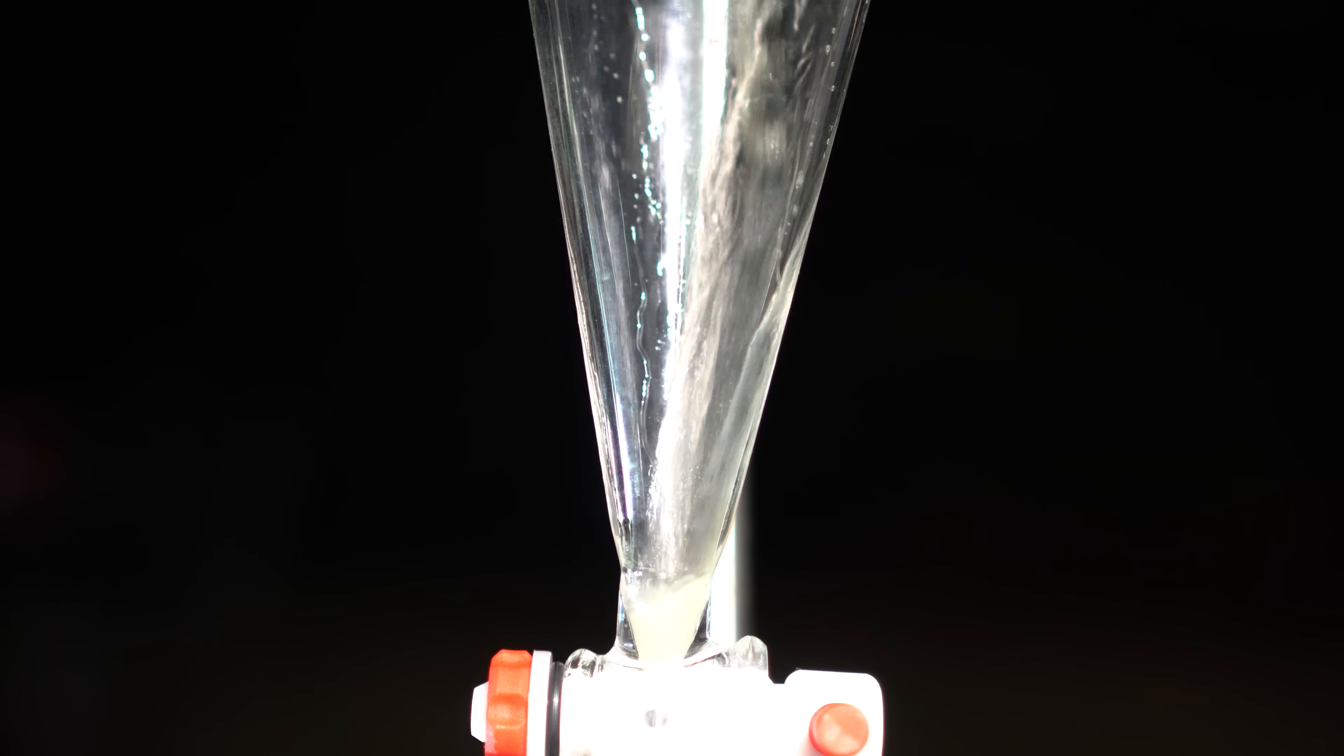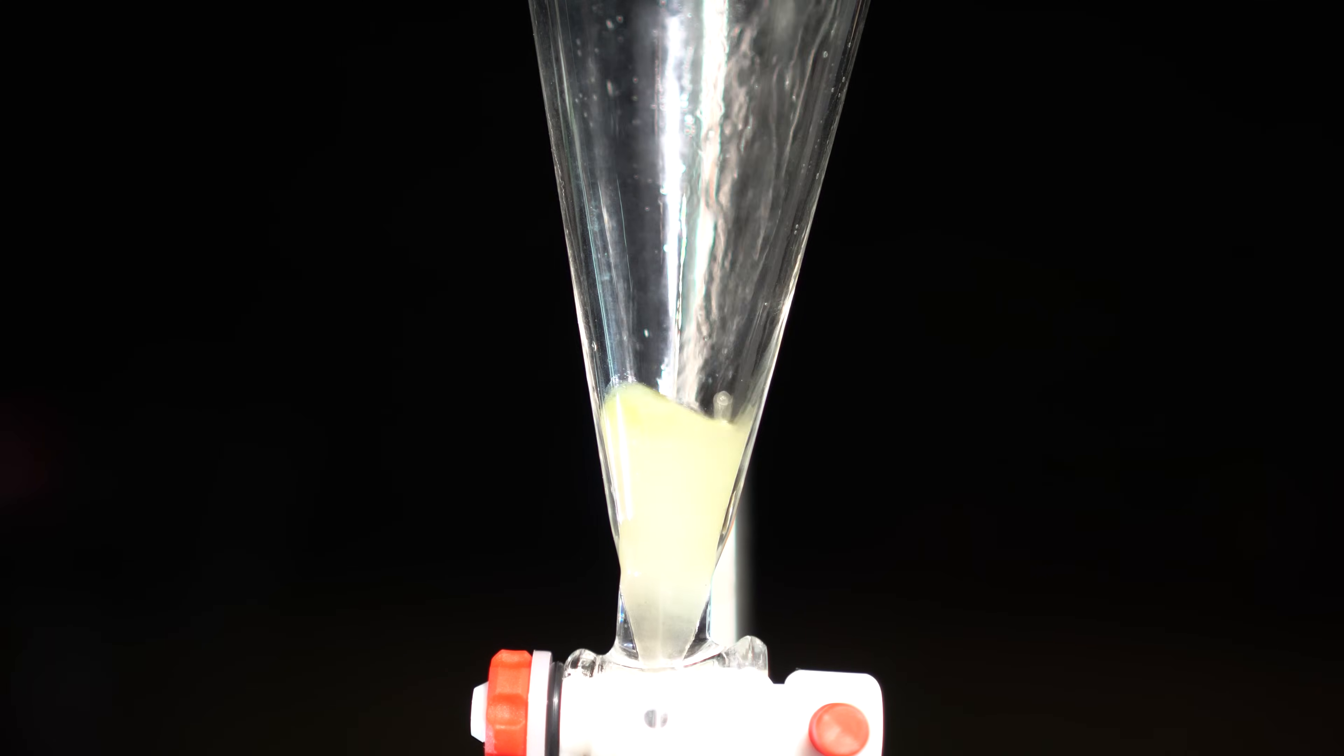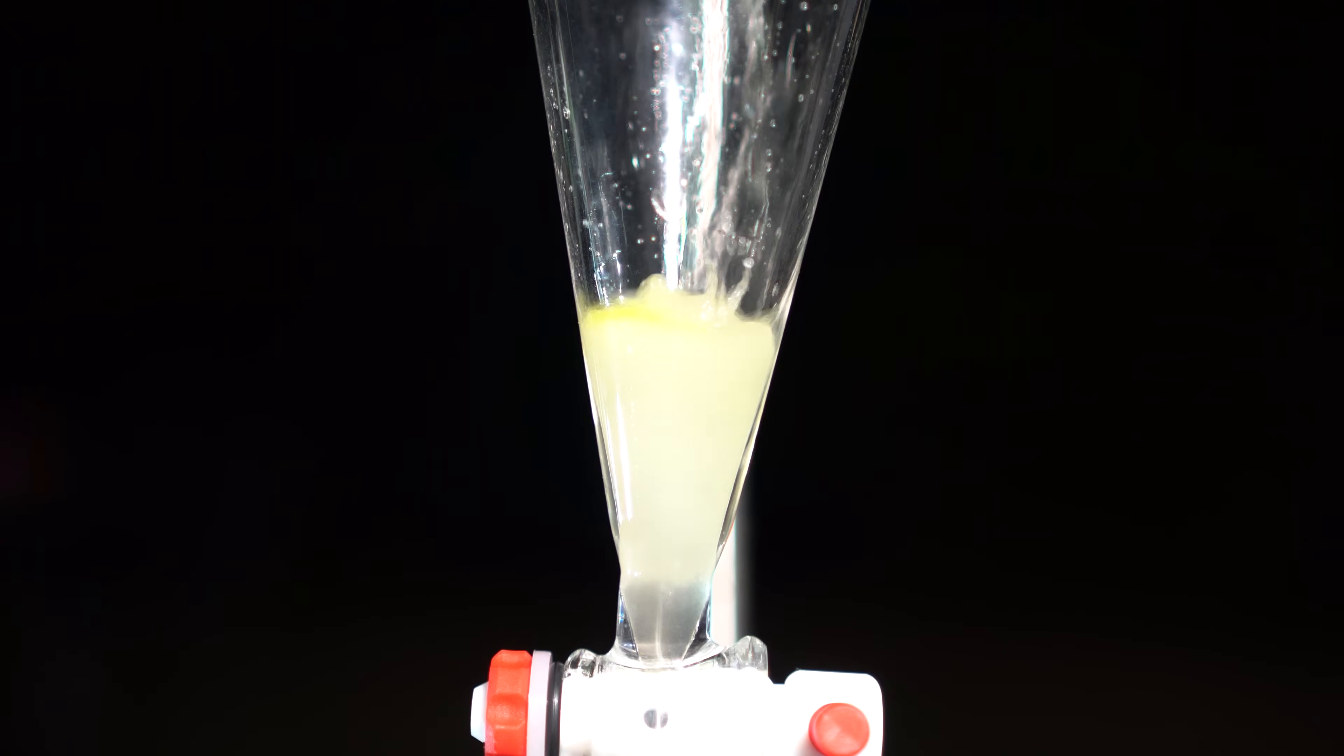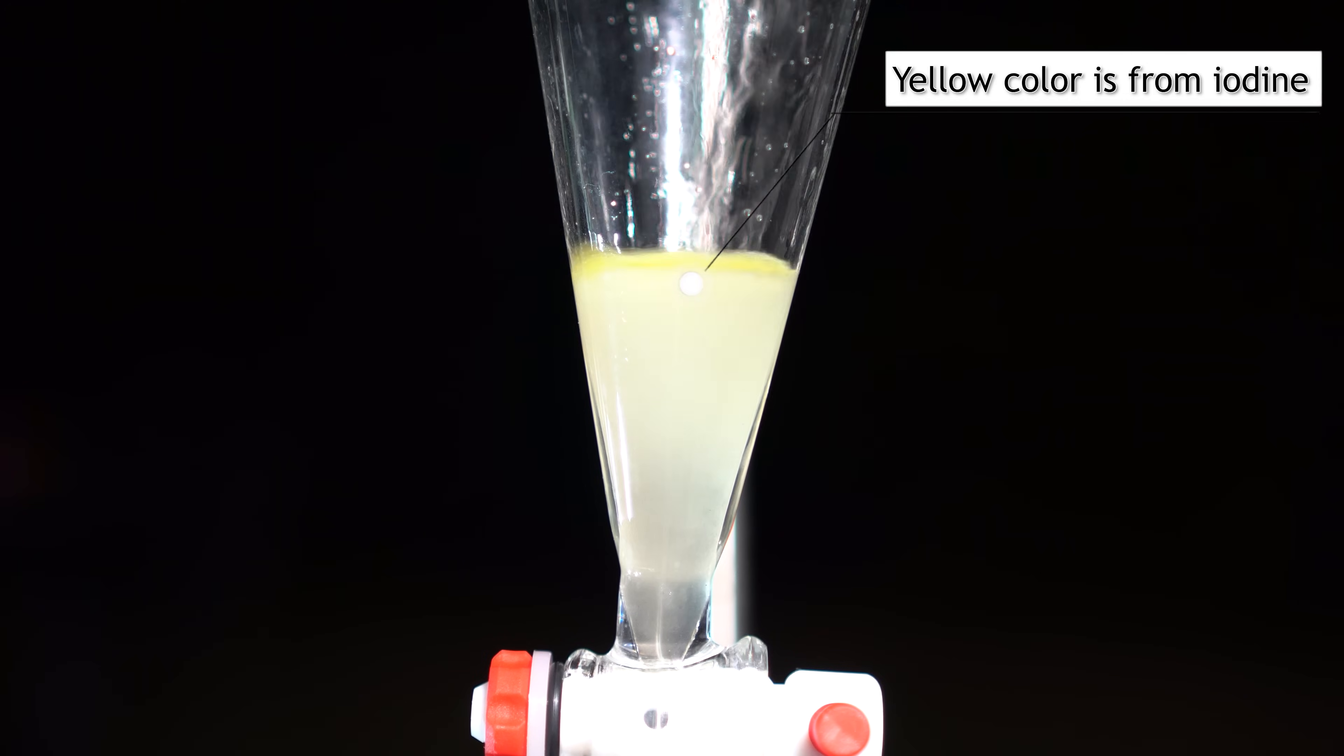I poured everything that was in the receiving flask into a separatory funnel, and we can see that there are two separate layers. The bottom iodomethane layer is cloudy, and the top layer, which I suspect to be water, is slightly yellow.